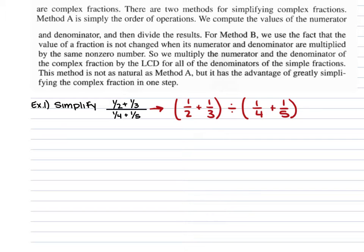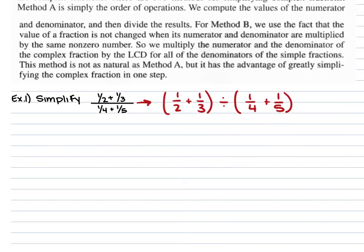Remember when you're dividing fractions: keep, change, flip. With the first set of parentheses, you have 1/2 plus 1/3. Your least common denominator here is 6, so this is going to be 3/6 plus 2/6.